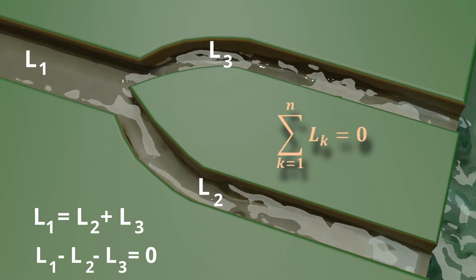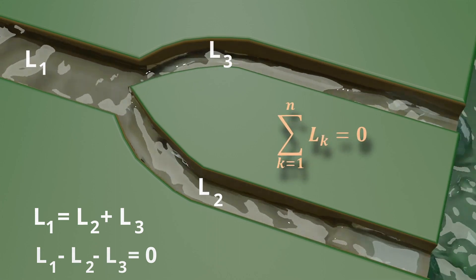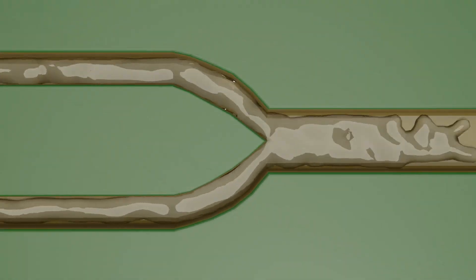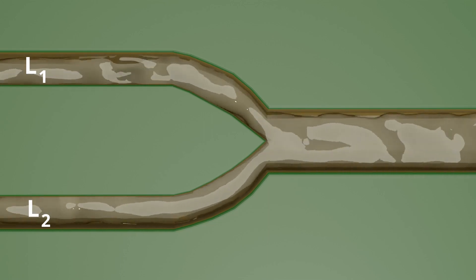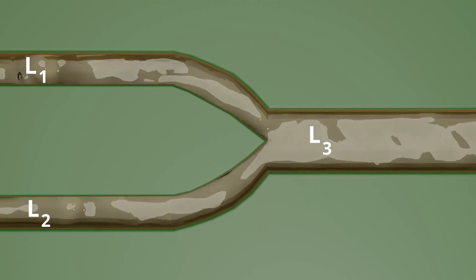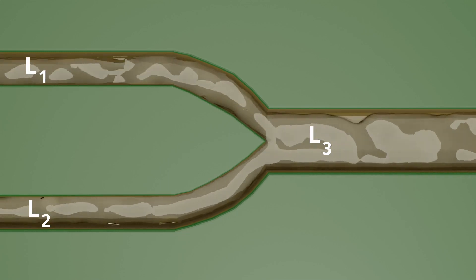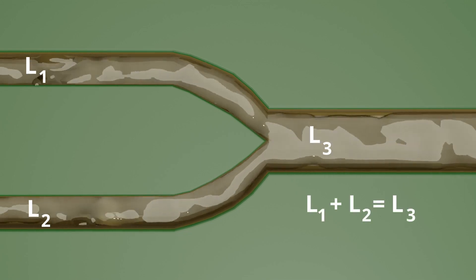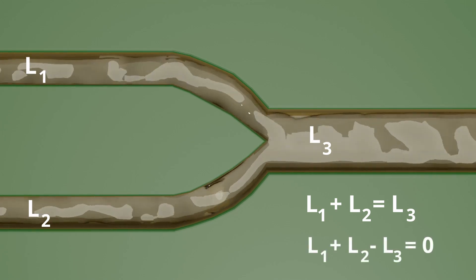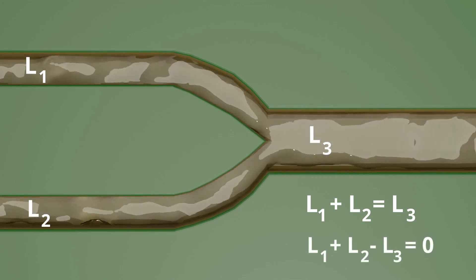In this analogy, let L1 and L2 be incoming flows and L3 is outgoing flow. Algebraically, L1 plus L2 gives L3. This can be written as L1 plus L2 minus L3 equals zero.